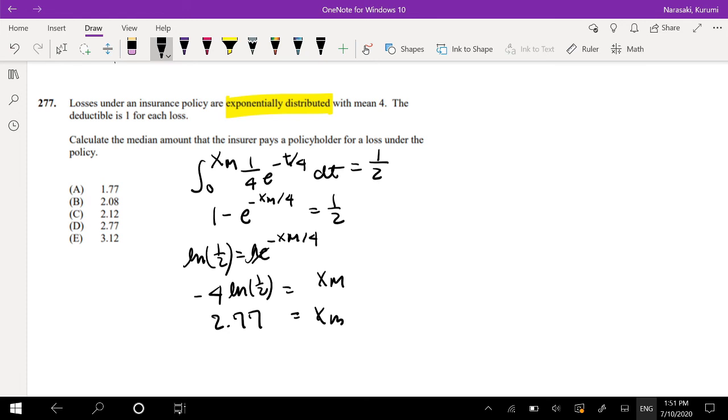Kind of the same thing. So if the loss is 2.77 and the deductible is 1, the company only owes the amount over 1. So that's just equal to 1.77, which is our answer.